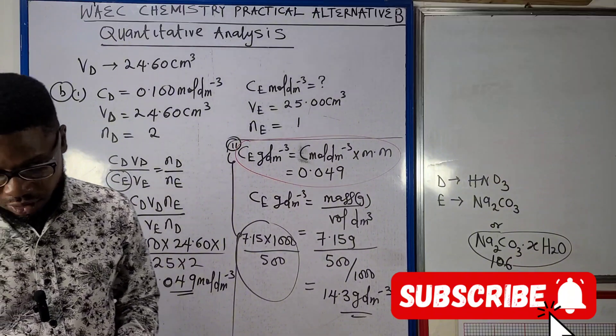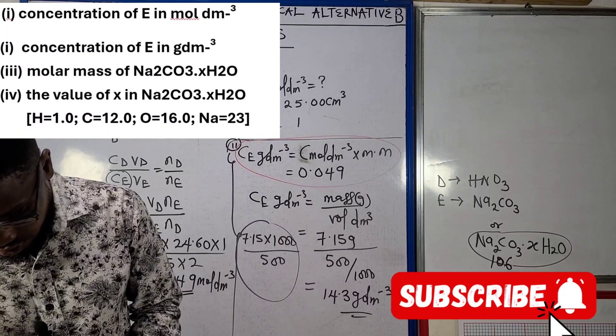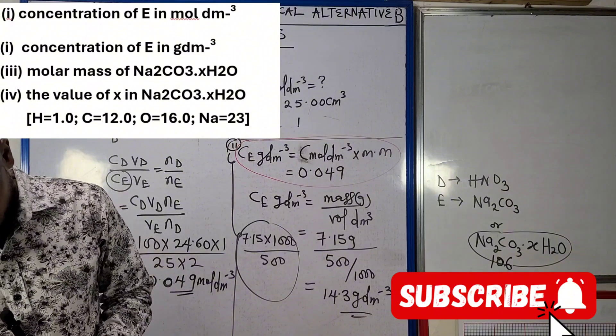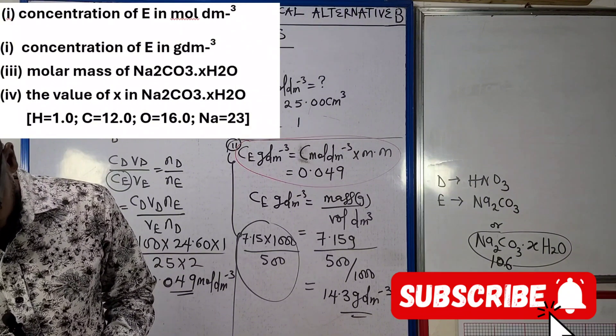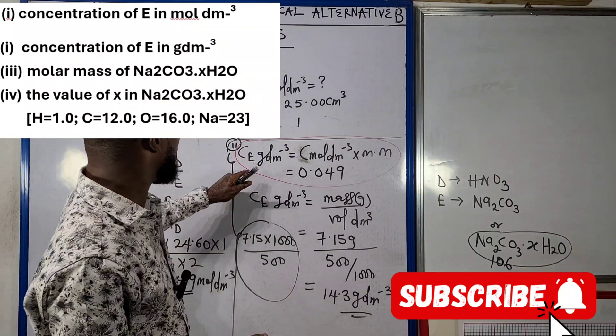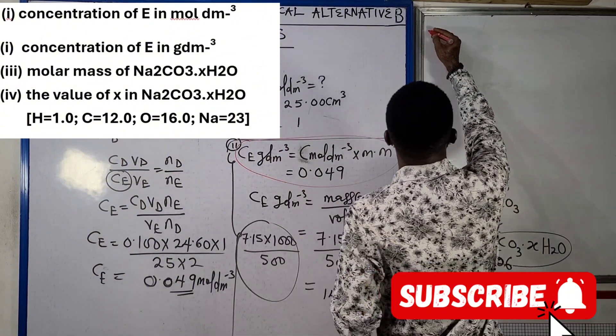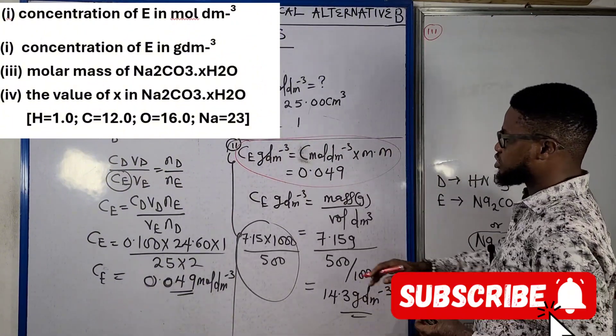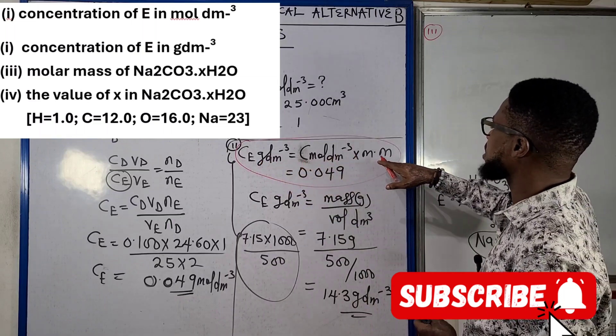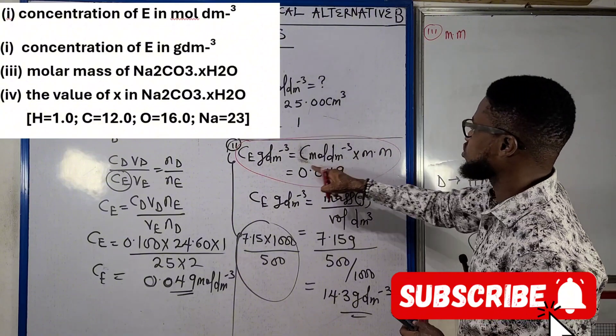Moving on, question three says we should look for the molar mass of Na2CO3·xH2O. You need to understand that if concentration in gram per dm³ equals concentration in mole per dm³ times molar mass, then it means that the molar mass is going to come as the divisor here.